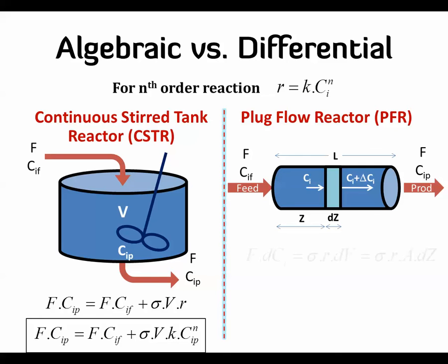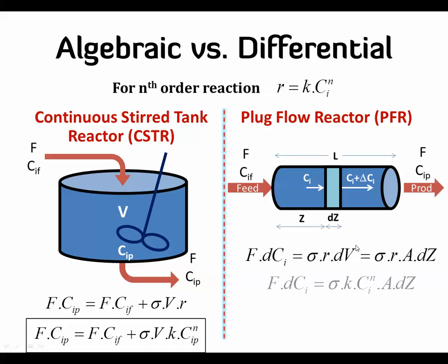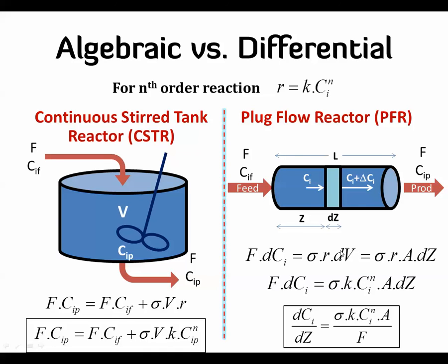For the PFR, we perform a balance on a general incremental element. The equation is: F times dCi equals sigma times r times dV, which equals sigma times r times A times dZ, since the cross-sectional area A is constant. This gives us the final differential form: the change in concentration per unit length, dC/dZ. This is a differential equation and cannot be solved the same way as the CSTR algebraic equation.